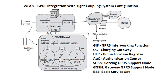WLAN GPRS integration with tight coupling system configuration is shown in this figure. In this figure, GIF represents GPRS Interworking Function, CG represents Charging Gateway, HLR represents Home Location Register, AUC represents Authentication Center, SGSN represents Serving GPRS Support Node, and GGSN represents Gateway GPRS Support Node.